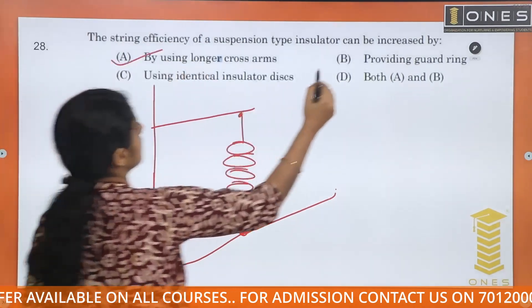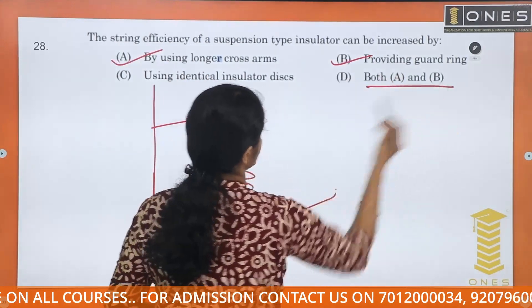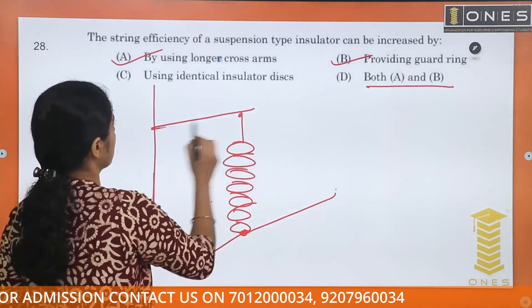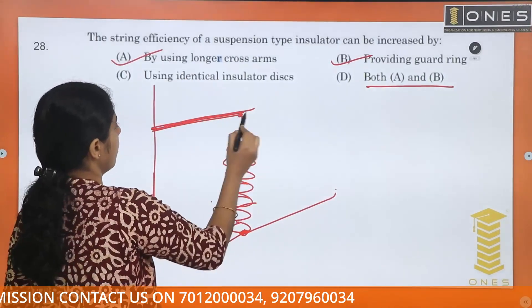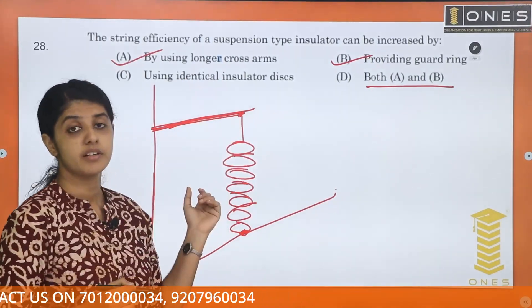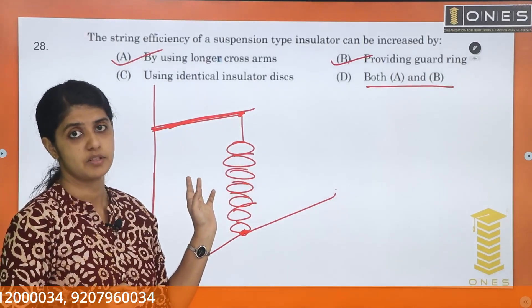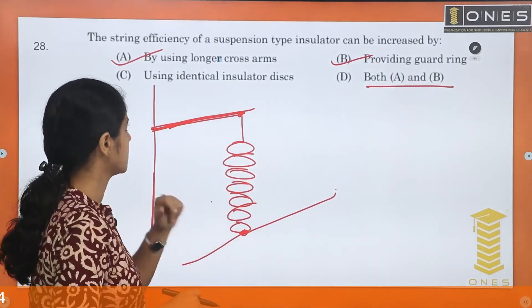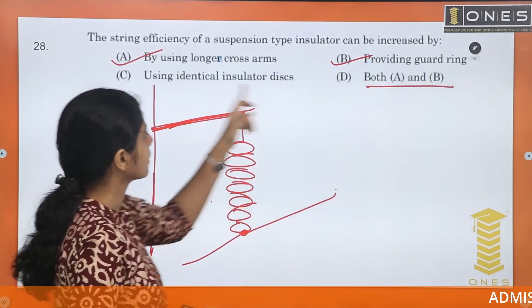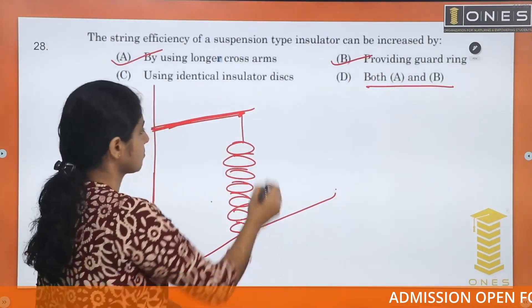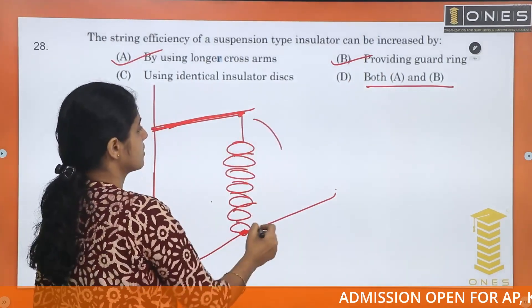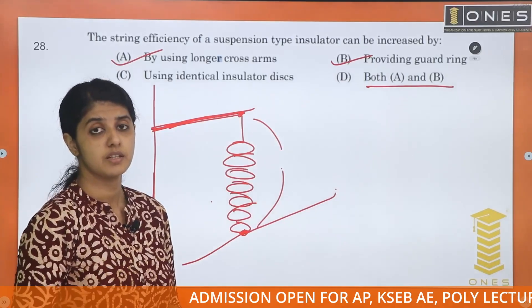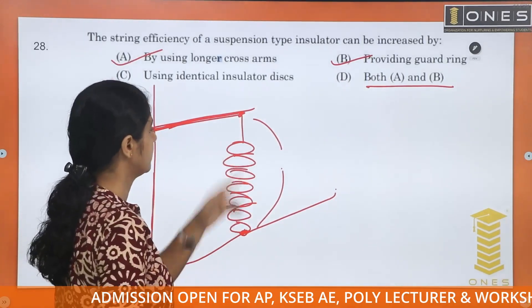The answer is both A and B. Using longer cross arms changes the value of the shunt capacitance, which in turn changes the string efficiency. Providing guard rings also helps to improve the string efficiency.